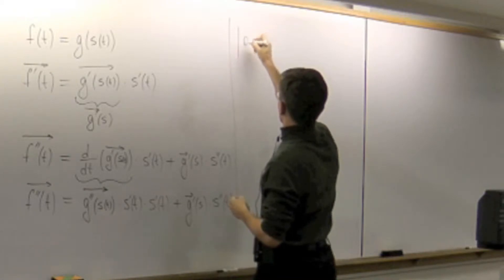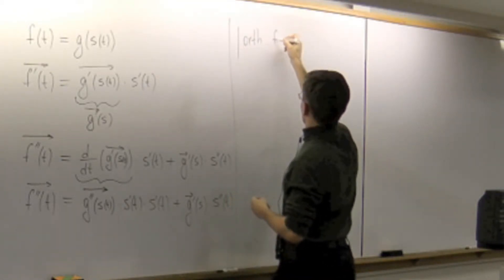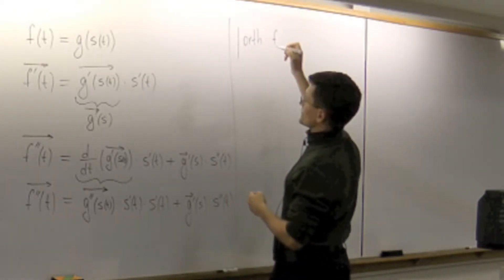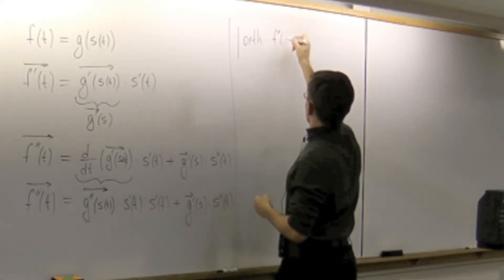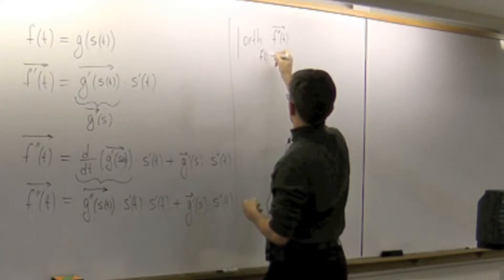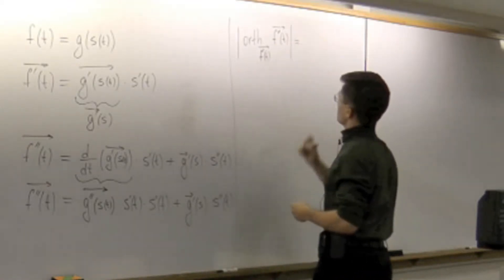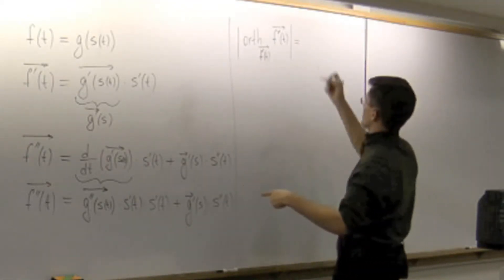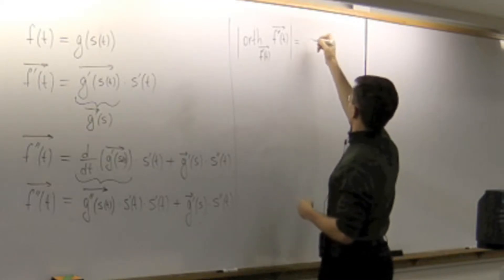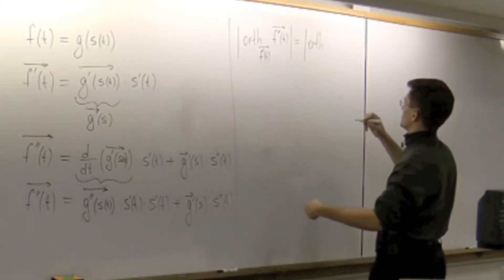What is the orthogonal component of f double prime with respect to t in the direction of f prime of t? I know what f double prime is, so I'm looking at the orthogonal component of this.